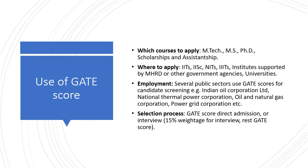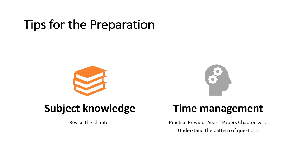Qualifying in GATE is a mandatory requirement for seeking admissions into master's and doctoral programs in institutions supported by MHRD and other government agencies. Even in some colleges and institutions that admit students without the MHRD scholarship, GATE qualification is mandatory. Further, many public sector undertakings use the GATE score in their recruitment process. During selection, candidates are either taken directly through their score or an interview is conducted, which carries a weightage of 15%.